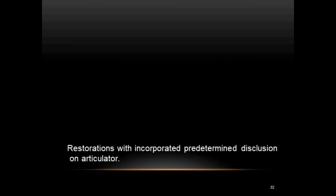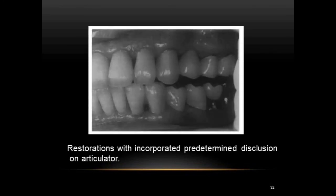Melted wax is applied on the lingual surface of the maxillary anteriors, and the articulator is moved in all excursions to record the anterior guidance. This anterior guidance is now in harmony with the condylar path and also with the predetermined posterior disclusion. The final restorations have incorporated predetermined disclusion on the articulator and anterior guidance in harmony with the condylar path — completing the twin table technique procedure.